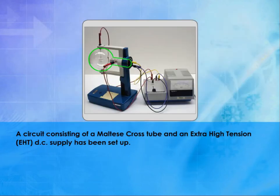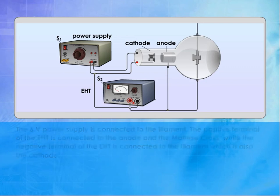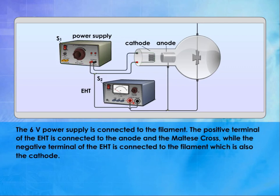A circuit consisting of a Maltese cross tube and an extra-high-tension DC supply has been set up. The Maltese cross tube consists of a filament cathode, an anode, a Maltese cross, and a fluorescent screen. The 6-volt power supply is connected to the filament. The positive terminal of the EHT is connected to the anode and the Maltese cross, while the negative terminal of the EHT is connected to the filament, which is also the cathode.